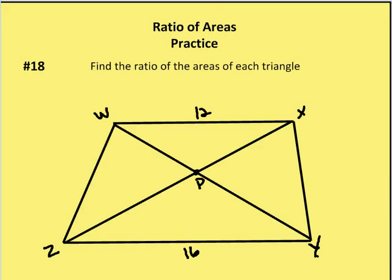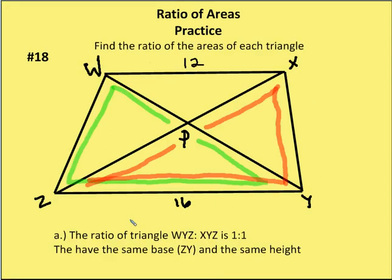So number 19, we're going to find the ratio of the areas of each triangle. There are five sets of triangles we're going to take a look at. The first one is the relationship of the area of triangle WYZ, which is in green, and XYZ, which is in red. That relationship is one to one, because they both have the same base in ZY and they have the same height. So the relationship of the areas of triangle WYZ to XYZ is one to one.